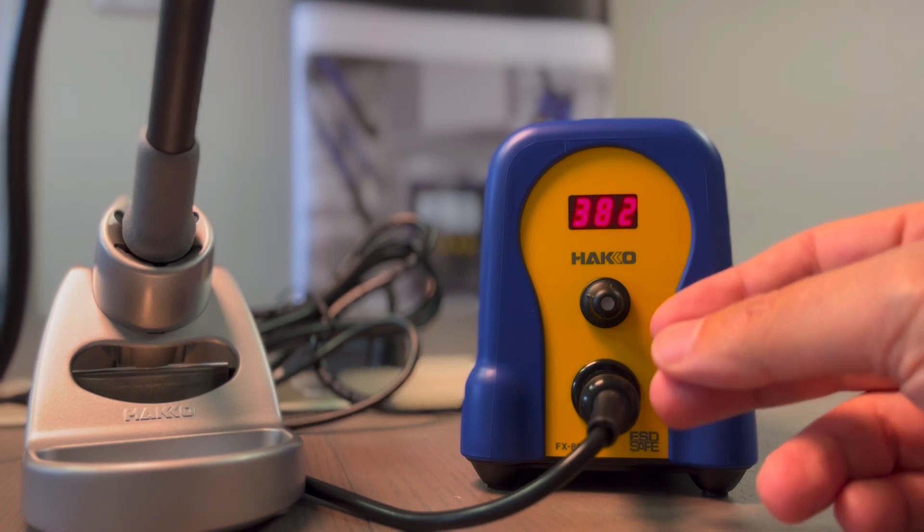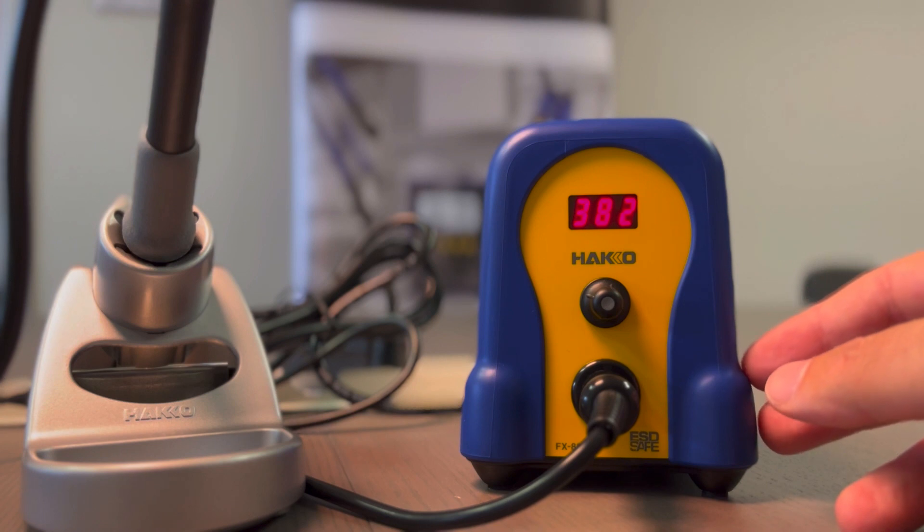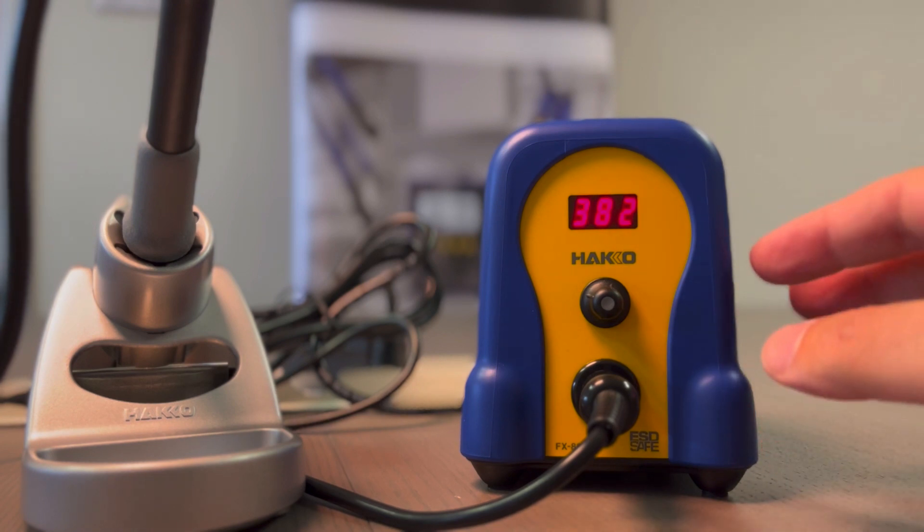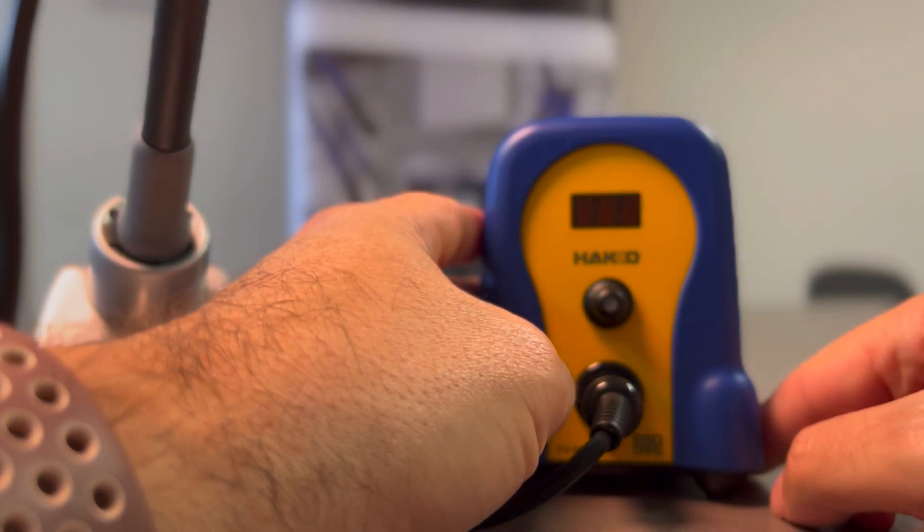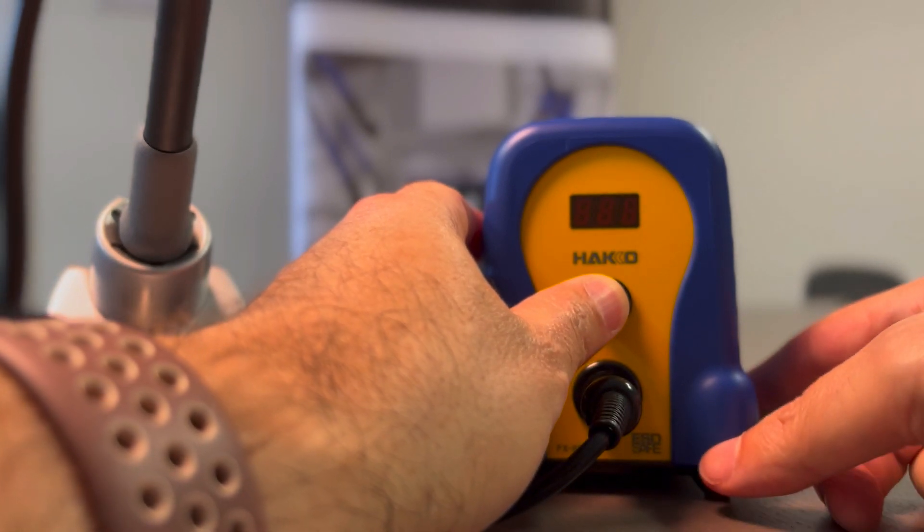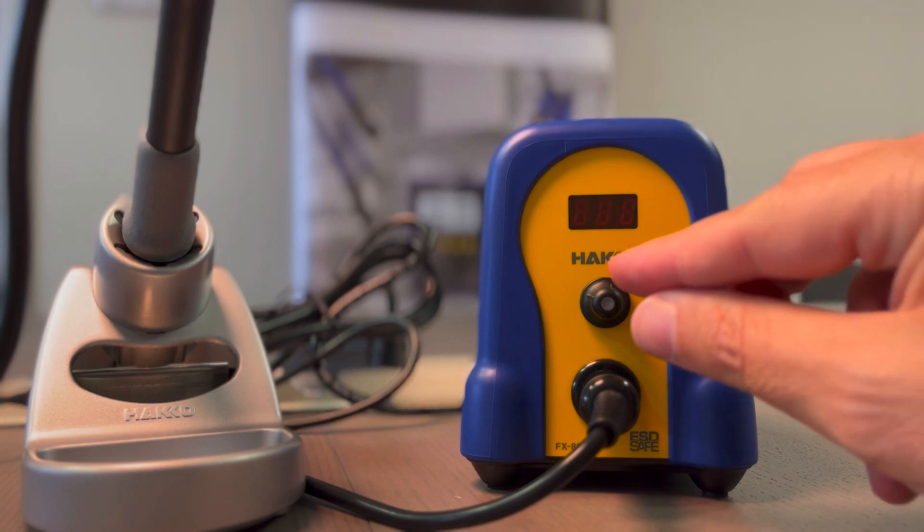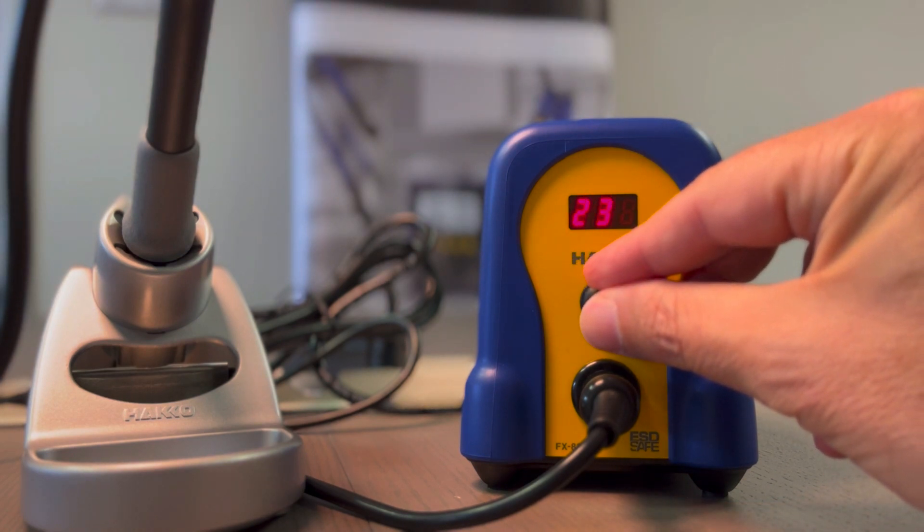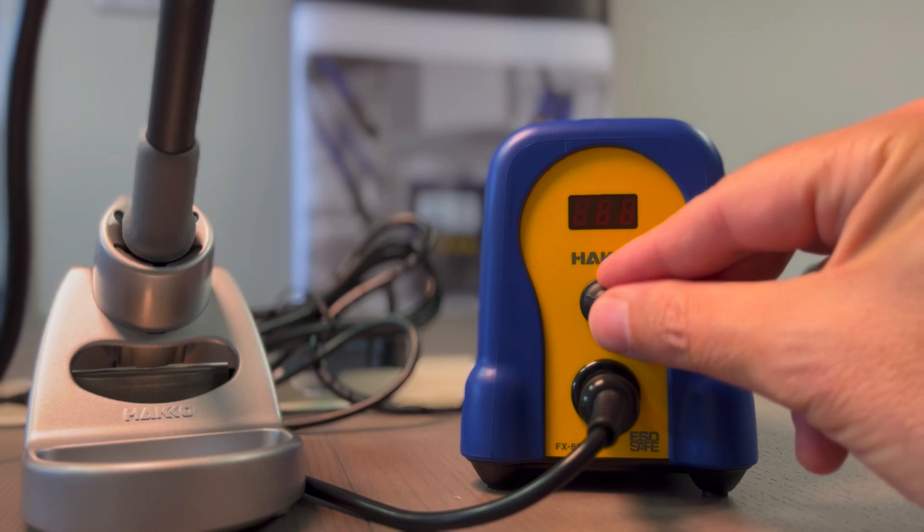To access the pre-selected temperature, we have to modify the setup of the station. To go into the menu, we power off the unit, keep the button pressed, and power on the unit. Now we will see different numbers. All these codes here are codes of settings.